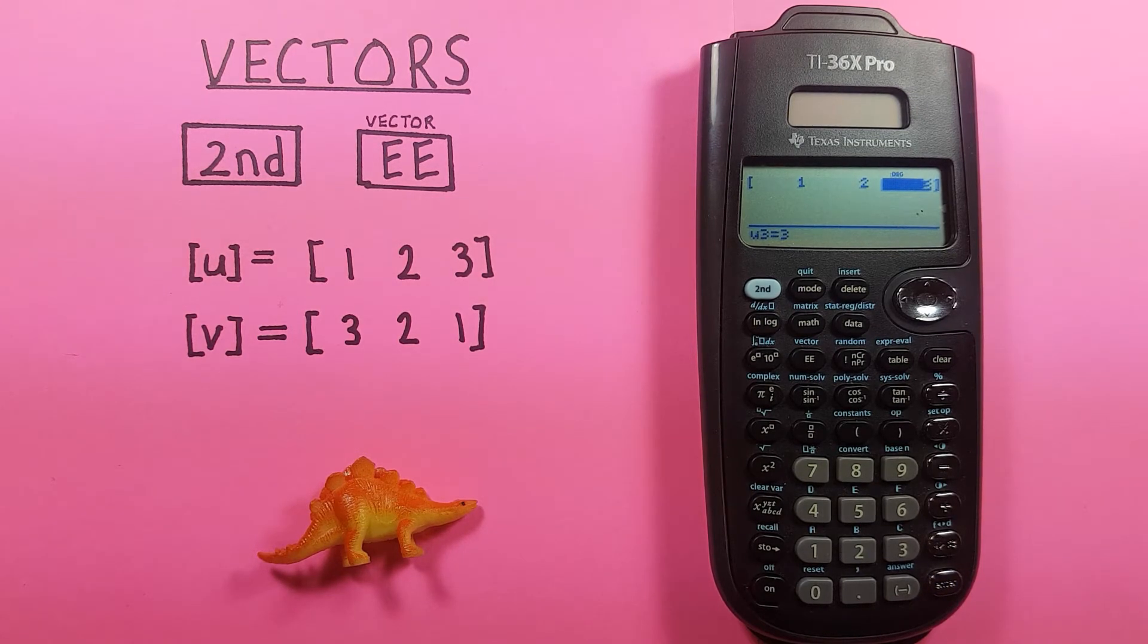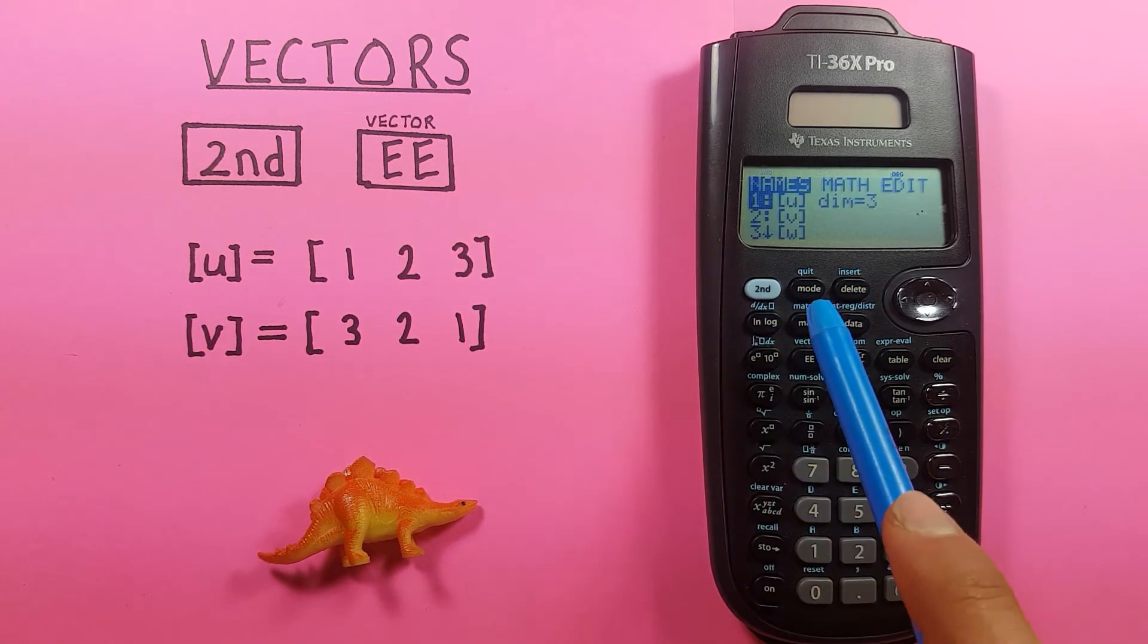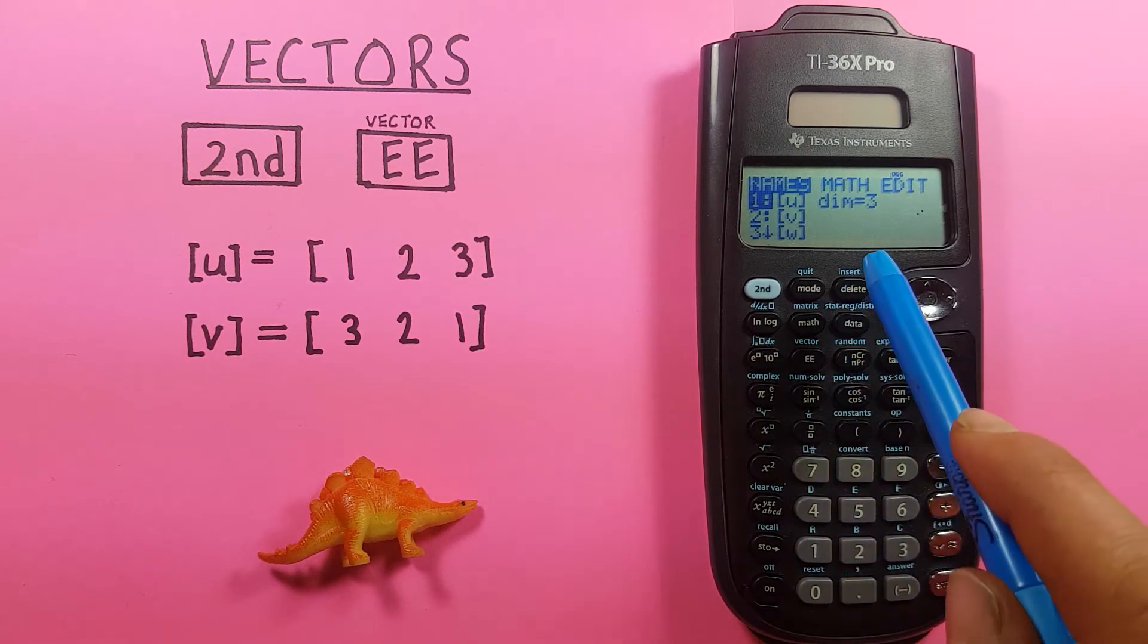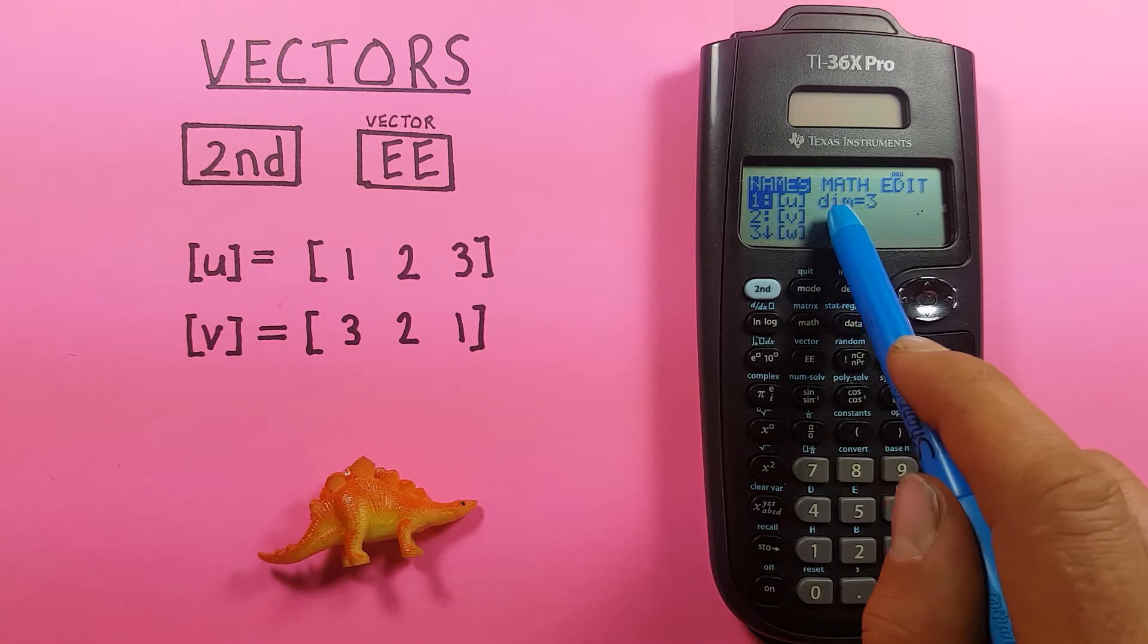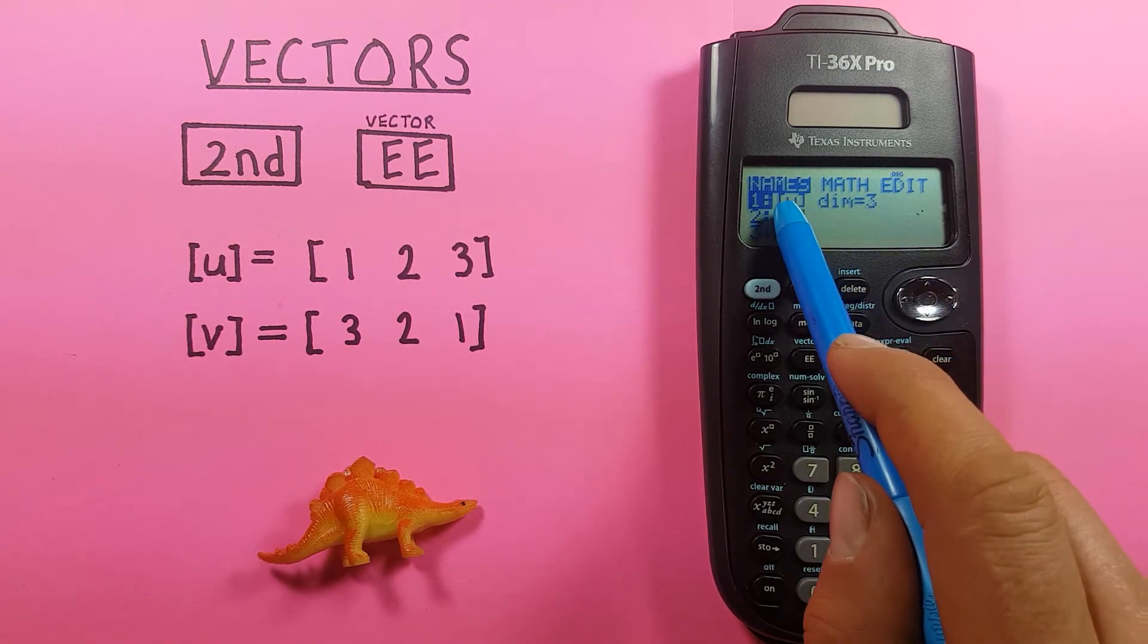Now to back out of this screen, we can either press second quit or we can press second EE to get back to our vector menu. When we do this, you can see we now have dim equals three or dimensions equal three under our U vector.